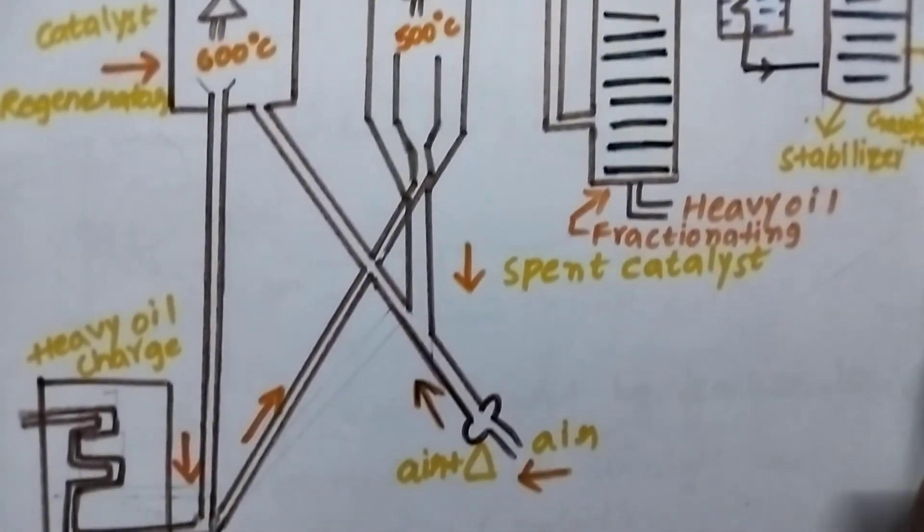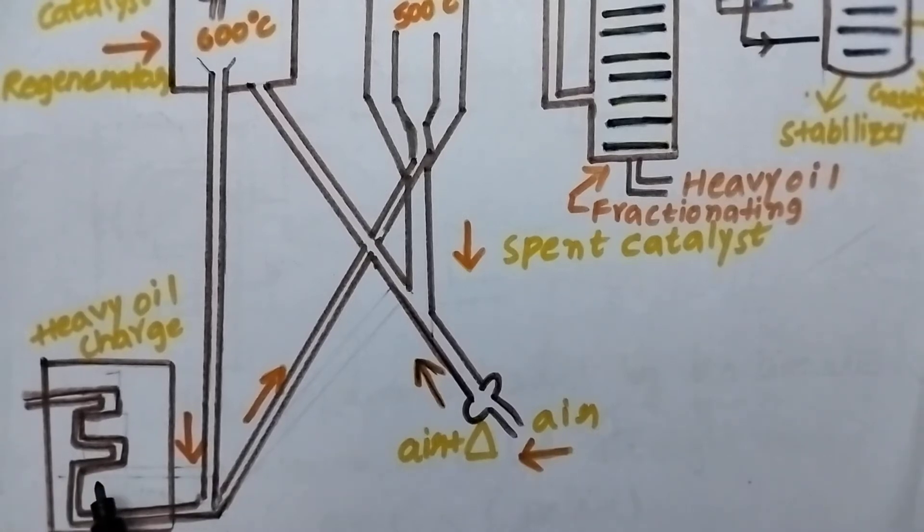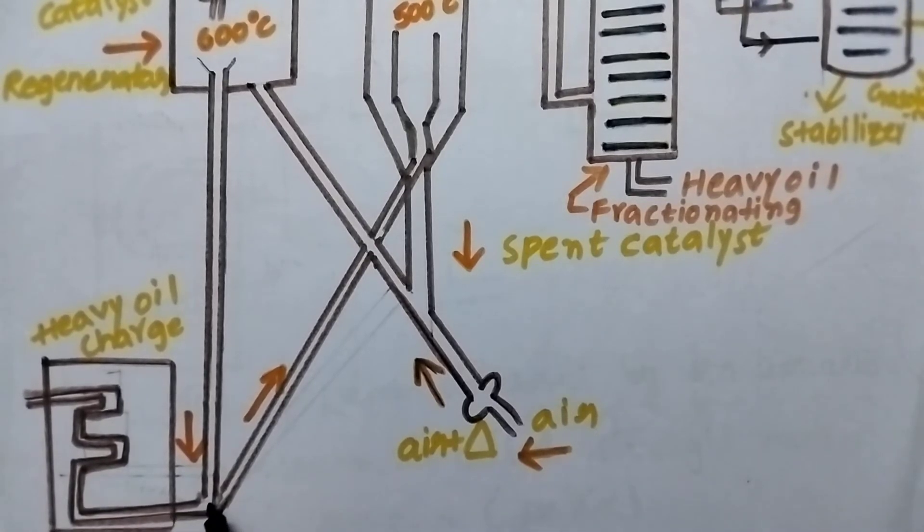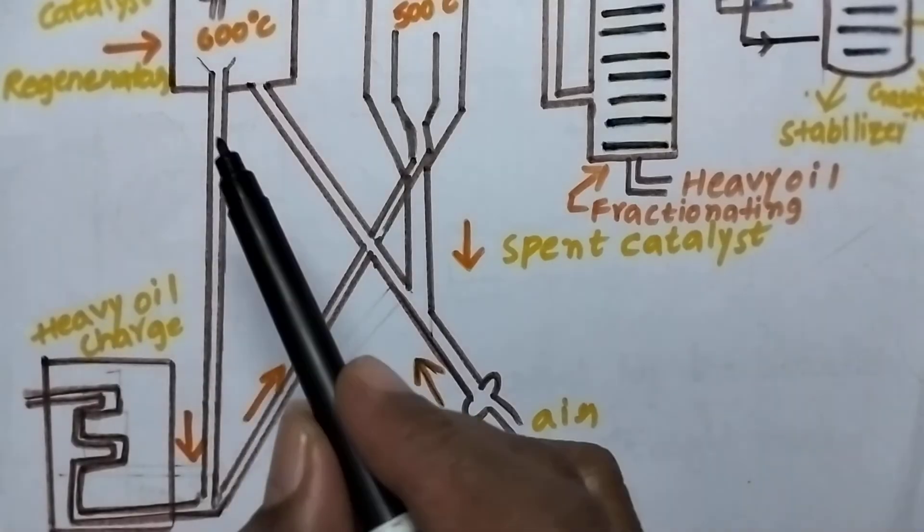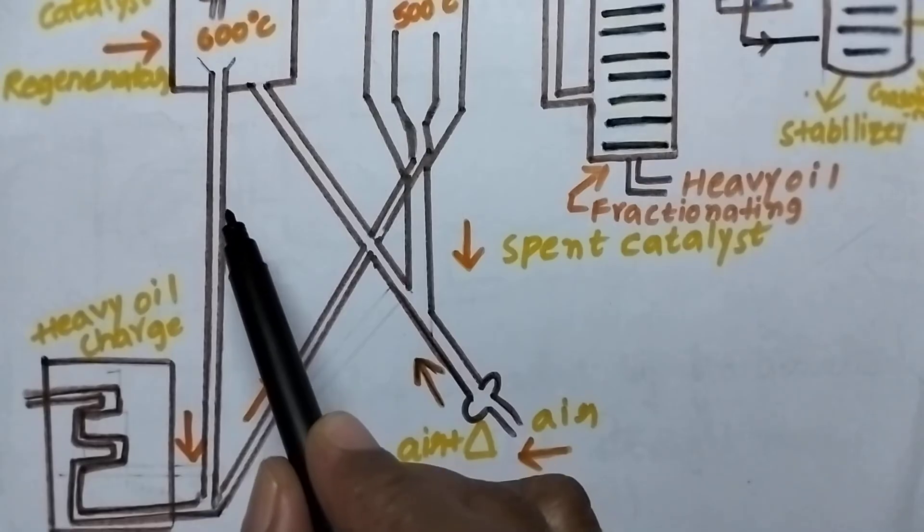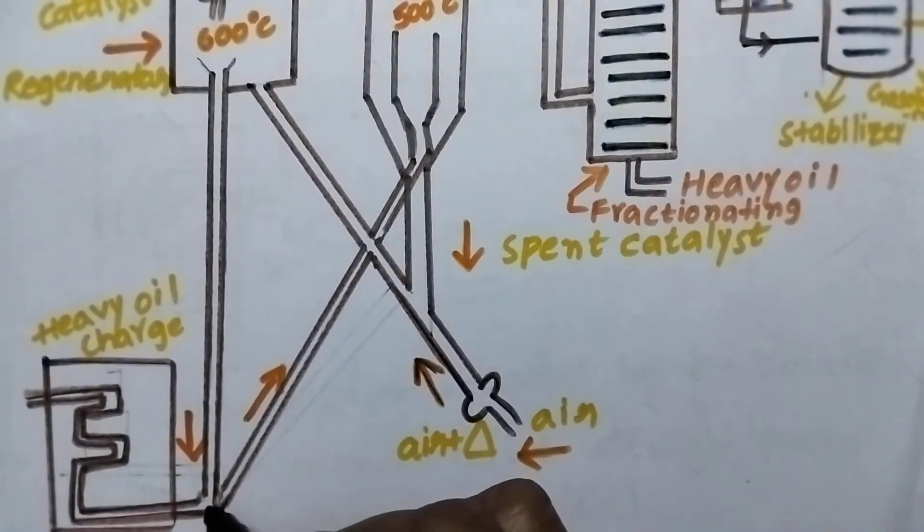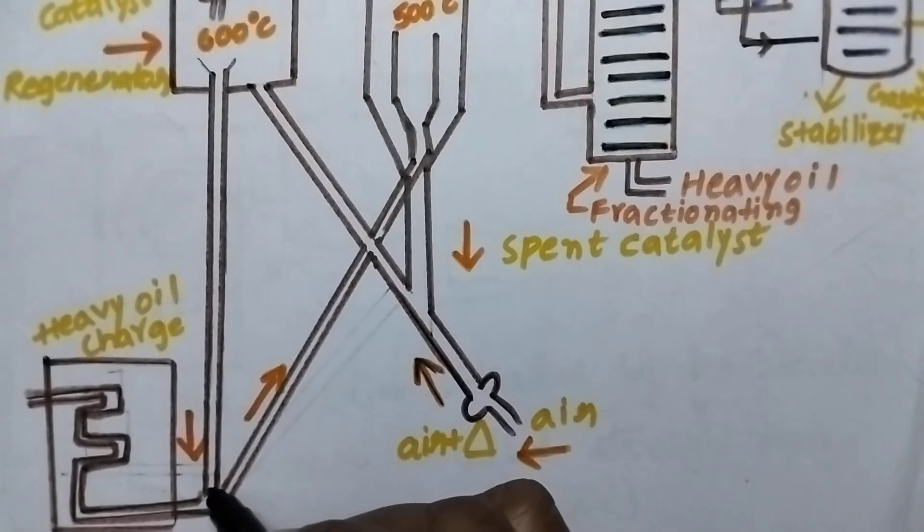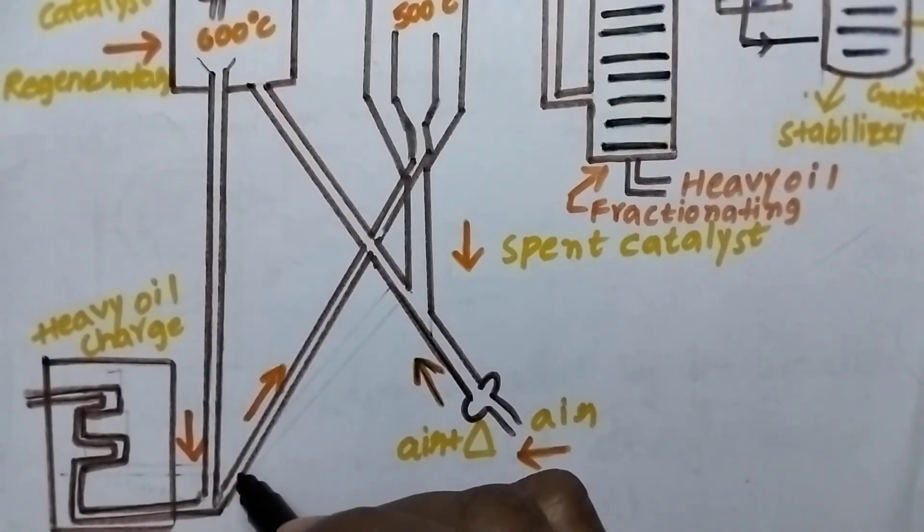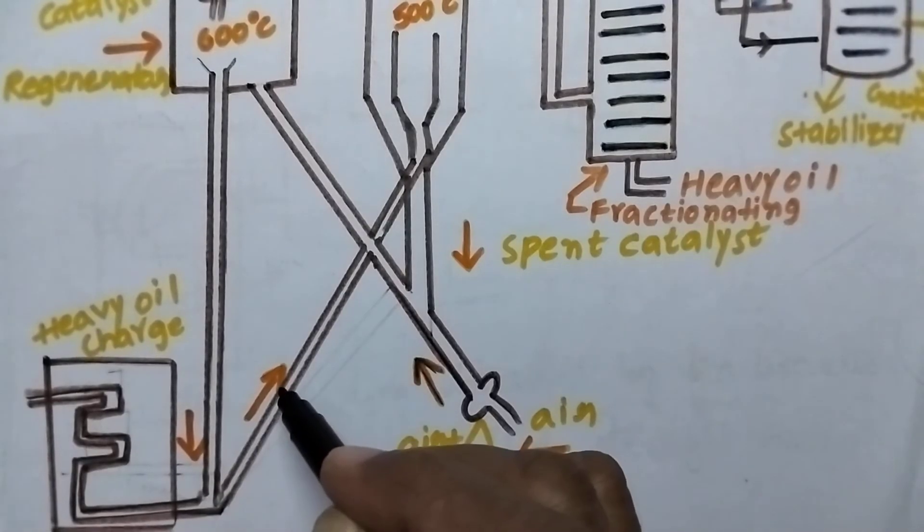Initially the heavy oil is heated to very high temperature, then the vapors slowly move in this direction. Because of the high temperatures maintained, the catalyst is present in the vapor state and mixes with the heavy oil vapor. The cracking starts in the pipeline itself.